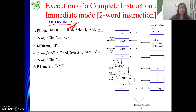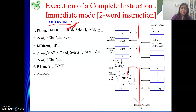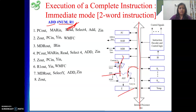Now we are waiting for 'num' to come from memory — WMFC. Once we come out of it, the data is in MDR. From MDR, place it on the bus — it is on the B input. The other input is in Y register; we bring it to the A input with select Y. Both inputs are there, give the add signal. The result is in Z register. Then Z out — the result is given to R1. Everything required for this instruction is done, so we can prepare for the next instruction. End.